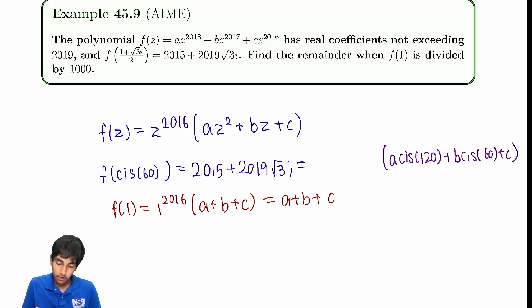This equals this. Now naturally, all we have to do is compare real parts and imaginary parts, whenever you have this type of stuff, because that will give you two equations. So first, let's do imaginary parts. 2019 root 3 is equal to a times sine of 120, which is root 3 over 2, plus b times sine of 60, which is also root 3 by 2. And then c does not have an imaginary part. Because remember, this is a real coefficient, so a, b, and c are all real.